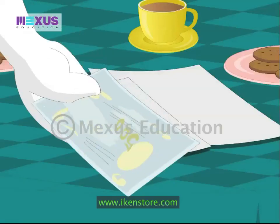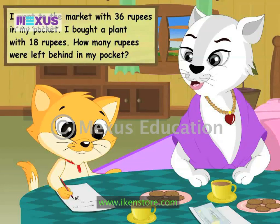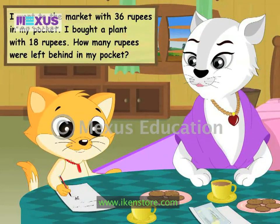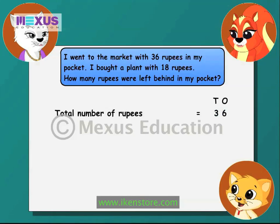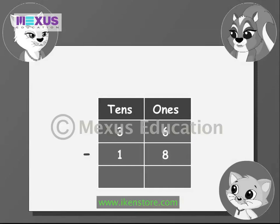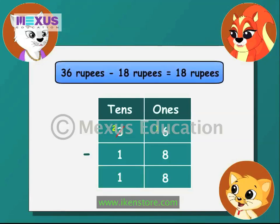Here's the next subtraction problem. I went to the market with 36 rupees in my pocket. I bought a plant for 18 rupees. How many rupees were left in my pocket? The total number of rupees is 36, so the number of rupees remaining is 36 minus 18. First, I will subtract the numbers in the ones place. As 6 is smaller than 8, we will need to borrow from 3. 16 minus 8 is equal to 8. Now moving to the tens column: 2 minus 1 is equal to 1. The answer is 18.